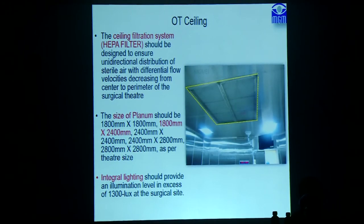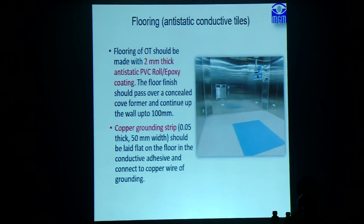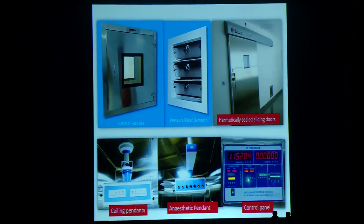The ceilings consist of HEPA filters of specified sizes, with integral lighting also included. OT walls have different specifications — for modular or non-modular setups, you can use epoxy or gypsum type boards required in various layers. Flooring is two millimeter thick anti-static PVC rolls with epoxy coating and copper grounding for electrical connections, with no dangling connections inside the OT. These are the various components of a modular OT, which can be seen in the different parts helpful in OT components.